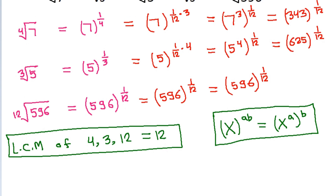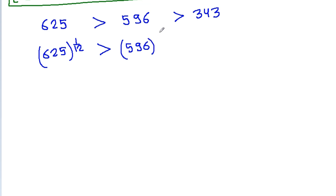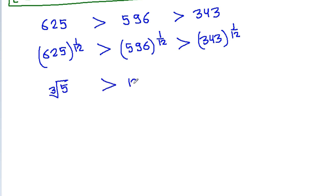So, 625 to the power 1 by 12 is greater than 596 to the power 1 by 12, which is greater than 343 to the power 1 by 12. Therefore, cube root of 5 is greater than 12th root of 596, which is greater than 4th root of 7.